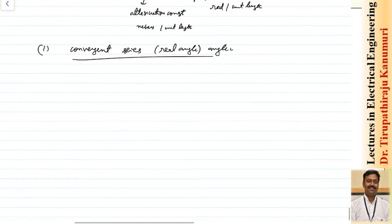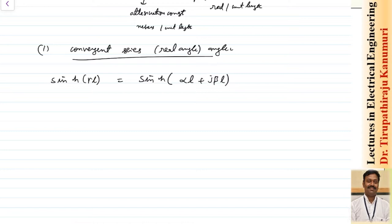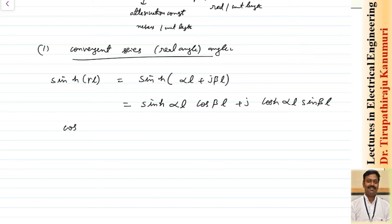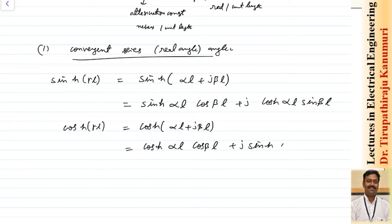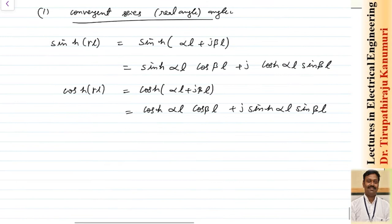In this method, sinh(γl) is written as sinh(αl + j·βl), which can be expanded as sinh(αl)·cos(βl) + j·cosh(αl)·sin(βl). Calculating sin(βl) and cos(βl) is easy, but calculating sinh(αl) and cosh(αl) is complex because you have to refer to hyperbolic function tables, which is a little tough.